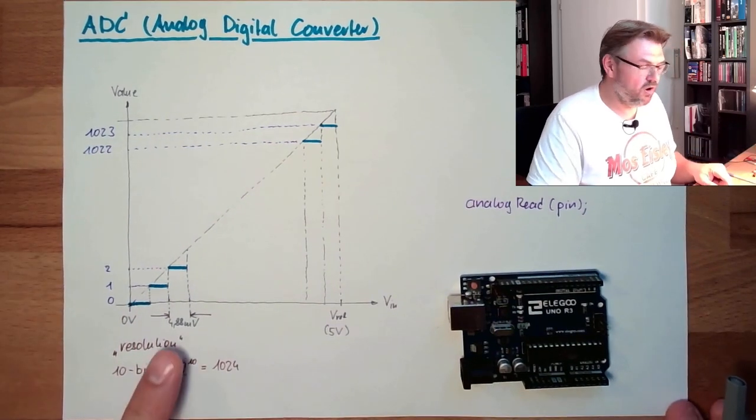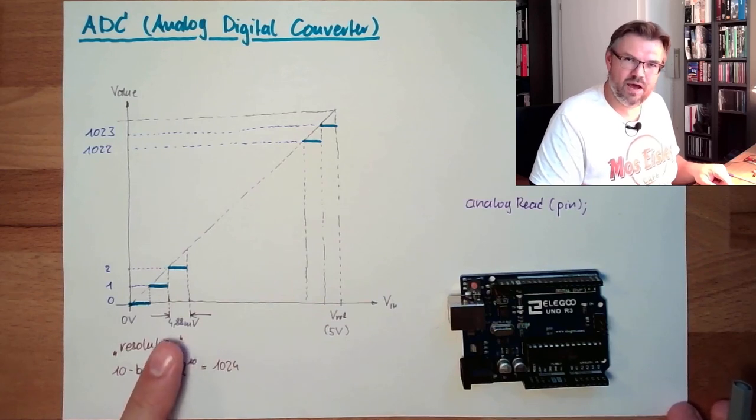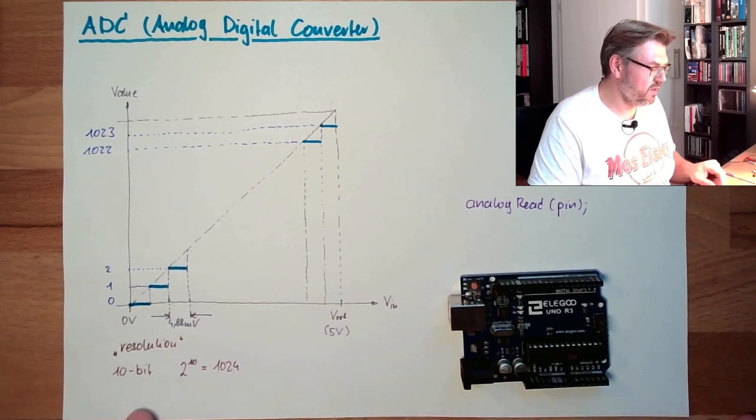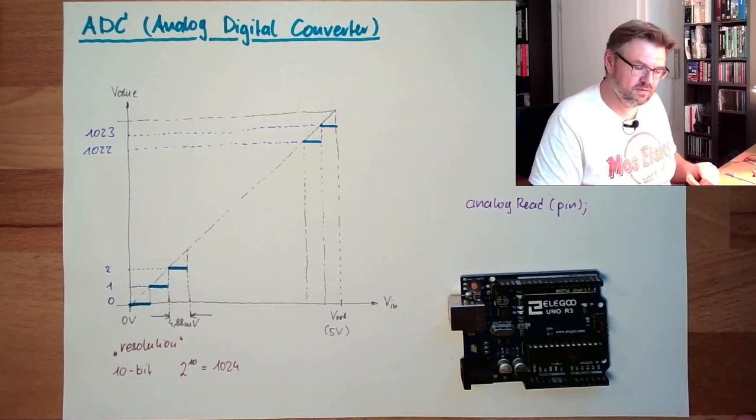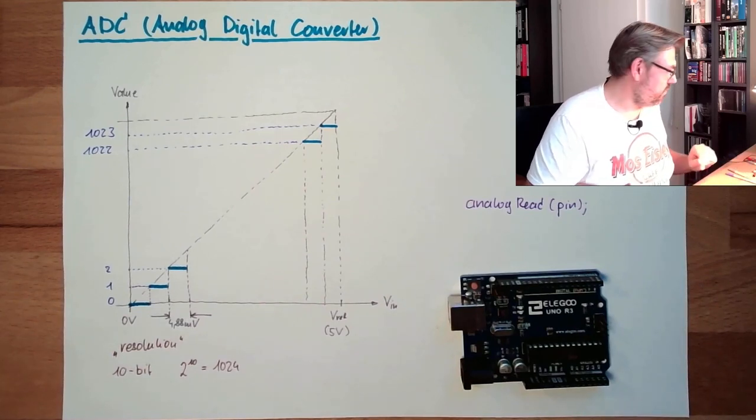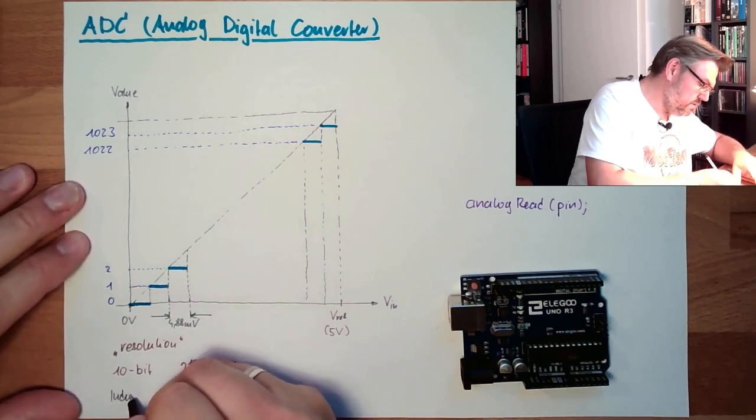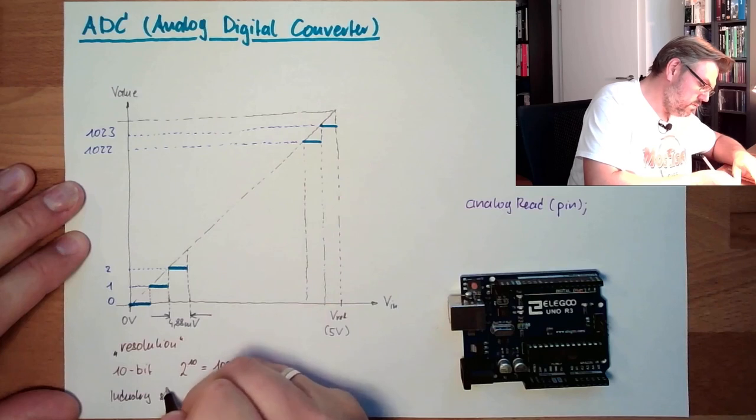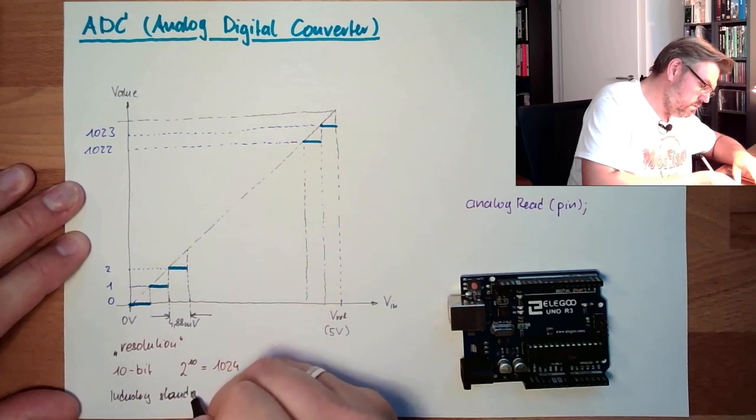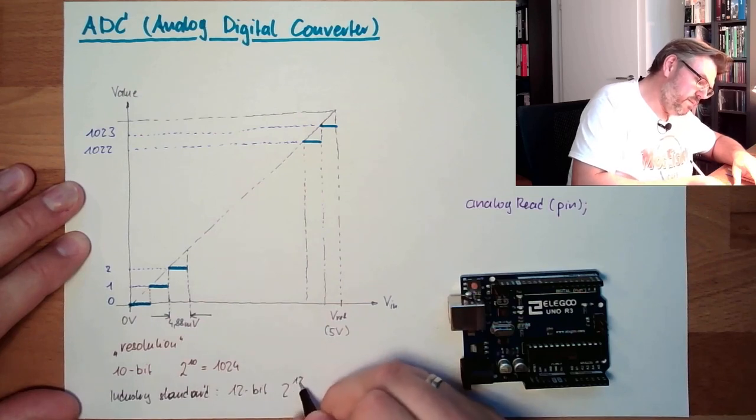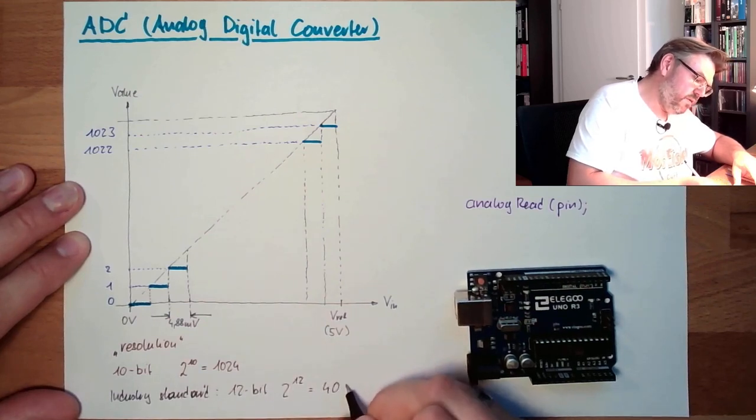Is this now high? No. This resolution is not really high. A standard, industry standard, analog-digital converter is 12 bits. This means 2 raised by the power of 12 and this is 4096.